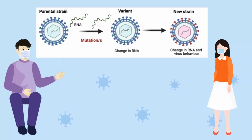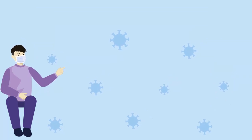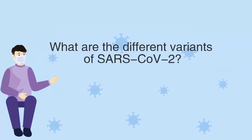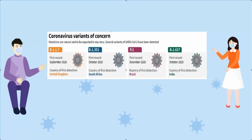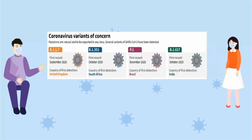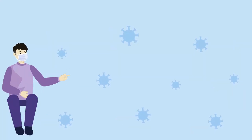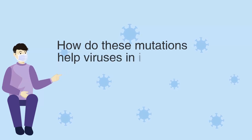So you mean to say there are different variants of SARS-CoV-2? Yes, many new variants have been identified to date due to different mutations. You may have heard some of their names, like the B.1.1.7 — the Alpha variant, the B.1.427, the more recent B.1.617 — the Delta variant, and the P.1 variant. So how do these mutations help viruses in infection?